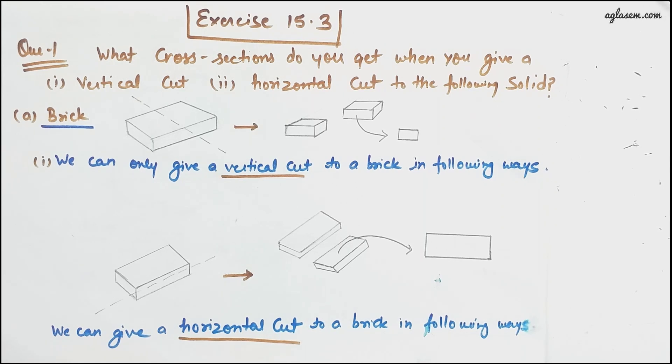So let's see what we have in this exercise. We have question number one that says: What cross sections do you get when you give a vertical cut and a horizontal cut to the following solids?